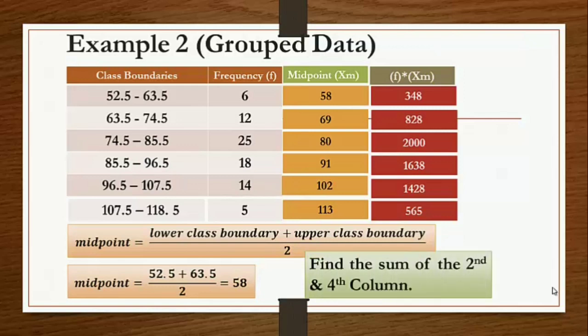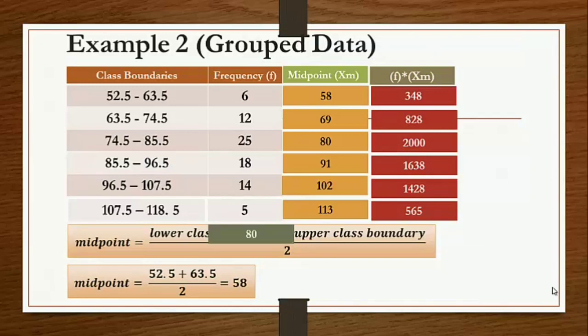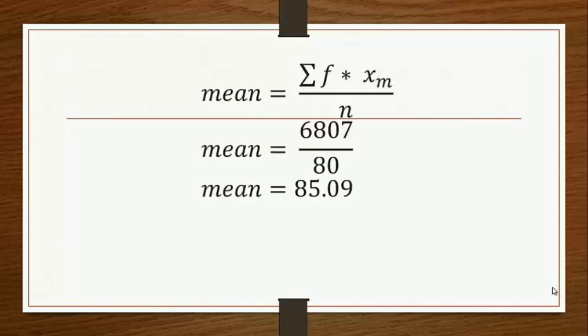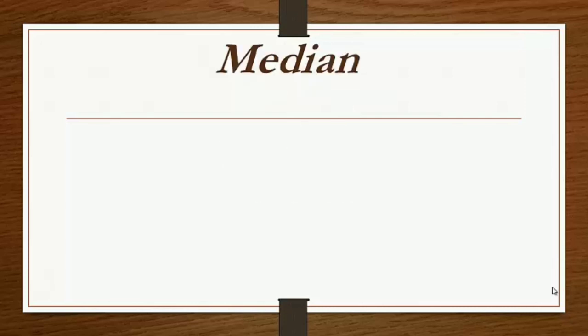The third step is to find the sum of the frequency column and the frequency-times-midpoint column. We add all frequencies and the products, getting 80 and 6,807 respectively. By substituting in the formula, we have 6,807 divided by 80. The mean is 85.09.